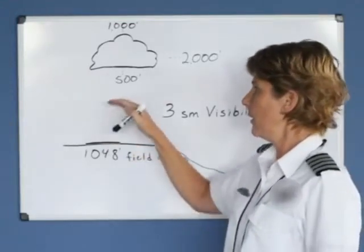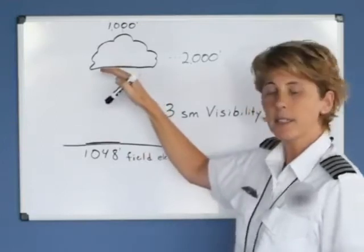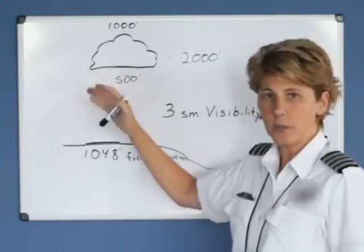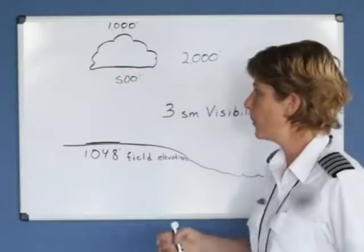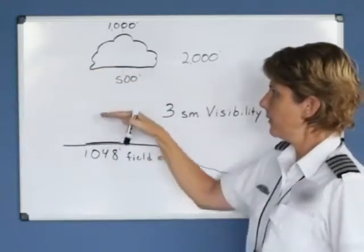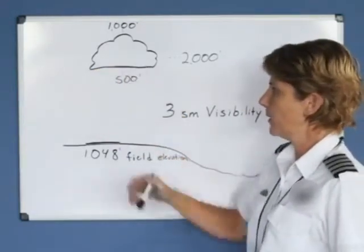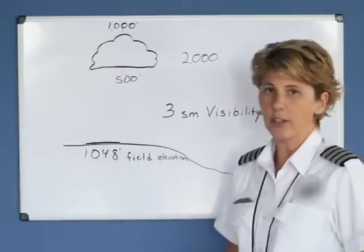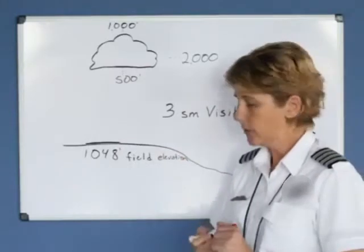When they report the base of the clouds during your weather briefing, they give the base of the clouds AGL — above the ground.